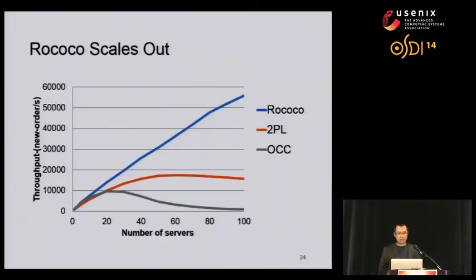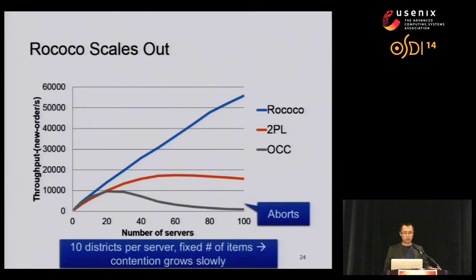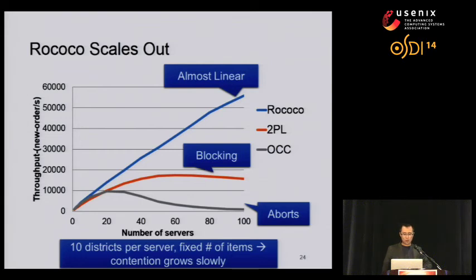In our second test, the scalability test, we fix the number of clients per server and increase the number of servers from 1 to 100. Because we have a fixed number of items in this scaling, the contention rate actually slightly increases as the system scales. The x-axis represents the number of servers and the y-axis represents throughput of new order transactions. The throughput of OCC almost drops to zero because there are too many aborts as the system scales. Two-phase locking stabilizes after its peak throughput with a slight drop due to deadlock detection aborts. As for Rococo, because it is not affected by aborts and blocking, the throughput scales almost linearly, much better than OCC and two-phase locking.